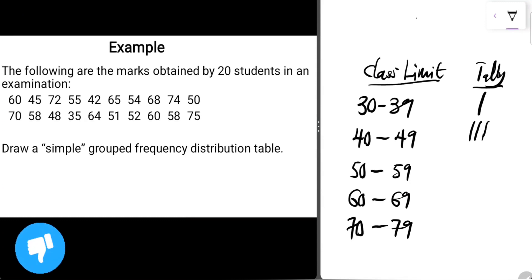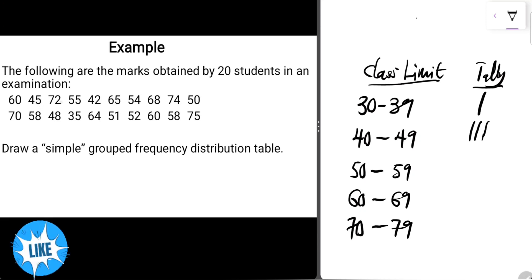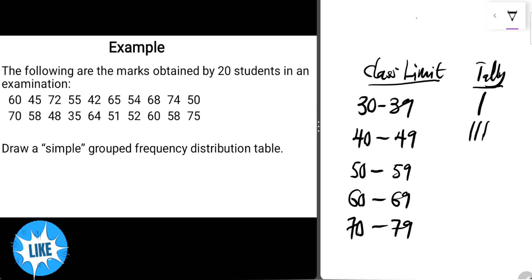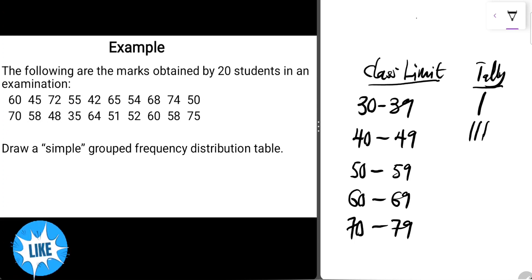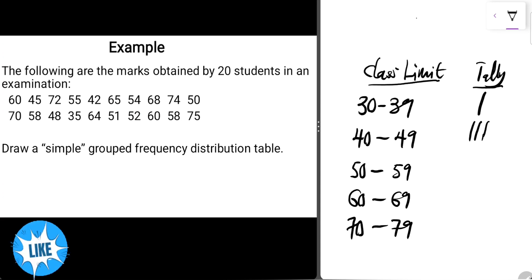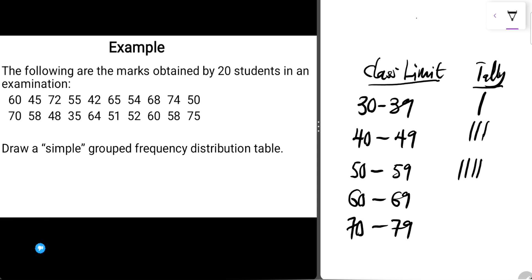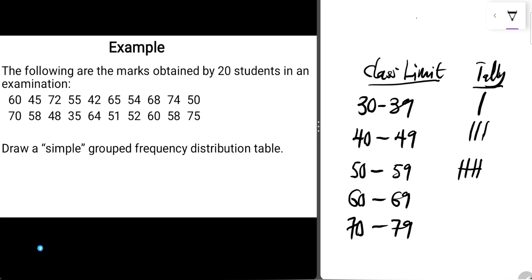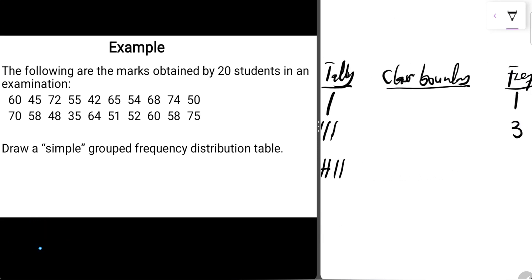The next class is 50 to 59. The frequencies falling within this class are: 55, 54, 50, 50, 51, 52, and 58 — that's seven values. So we have the first five strokes with the fifth crossing the first four, then two more strokes, giving us a frequency of 7.